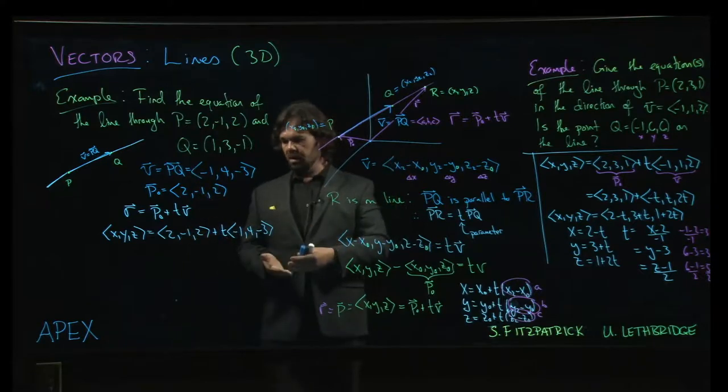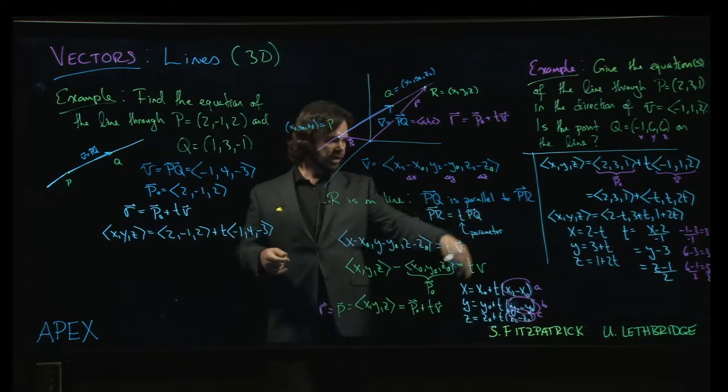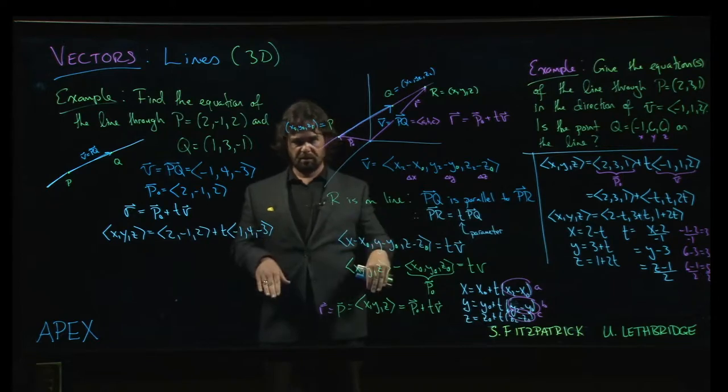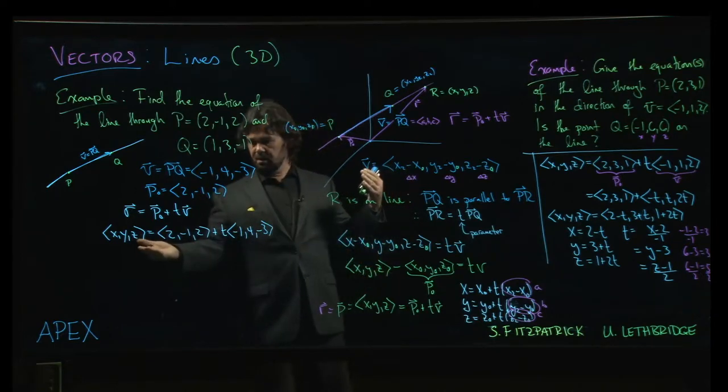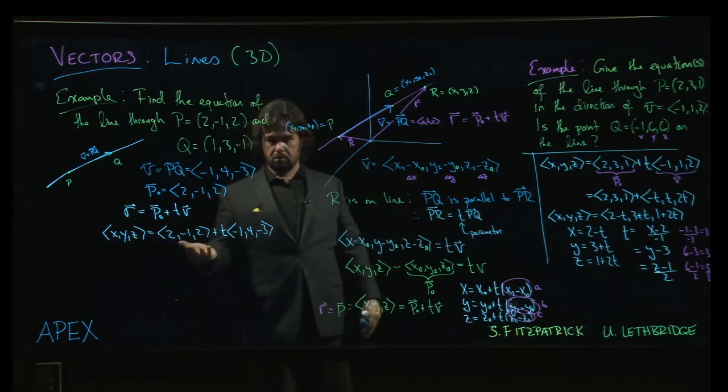That's it. There's the line. If you wanted to, you can combine them like we did over there. You can get the parametric equations or the symmetric equations. But if you're just looking for any old equation of a line, vector equation works well, and there it is.